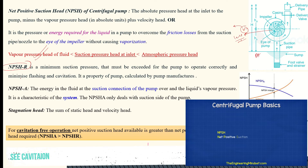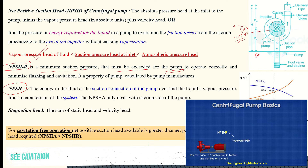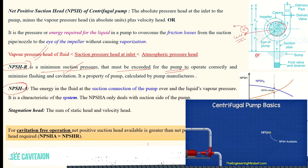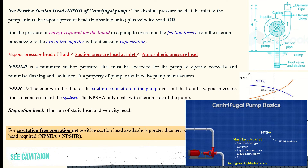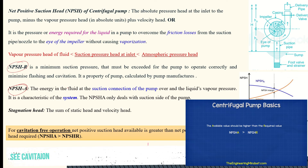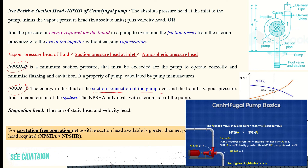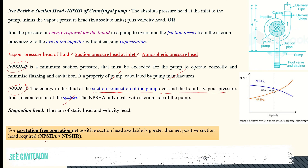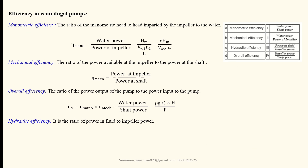NPSH has two types: NPSH required and NPSH available. NPSH required is the minimum suction pressure that must be exerted by the pump to operate correctly — the minimum head needed so water can move from the source to the impeller. NPSH available is the actual head available in the system — the energy in the fluid at the suction connection above the liquid vapor pressure. NPSH required is a characteristic of the pump, determined by the manufacturer. To avoid cavitation, the pump should be operated when NPSH available is always greater than NPSH required.